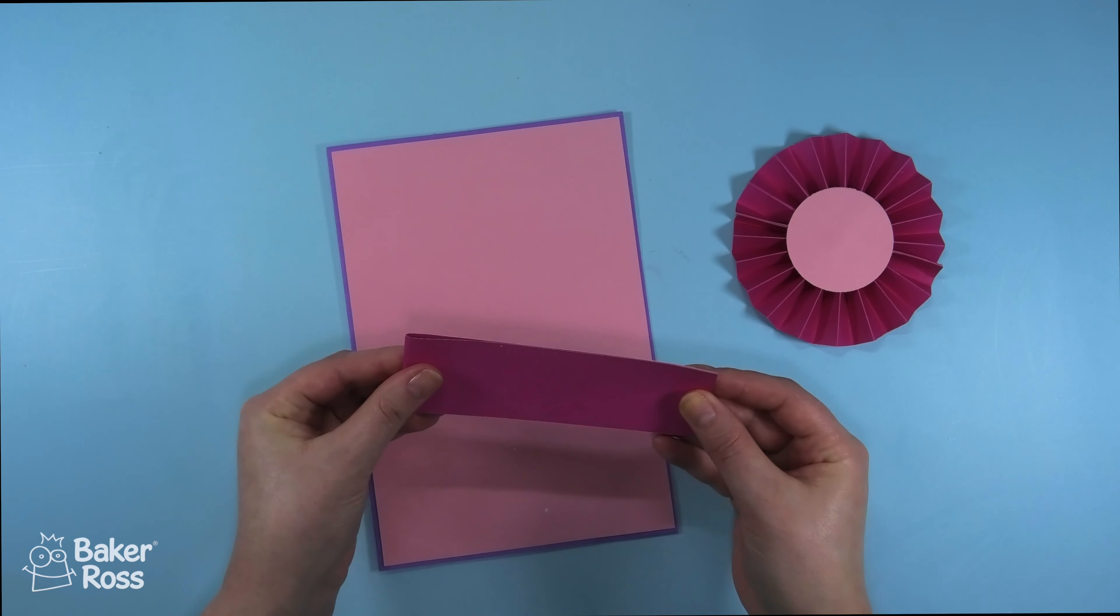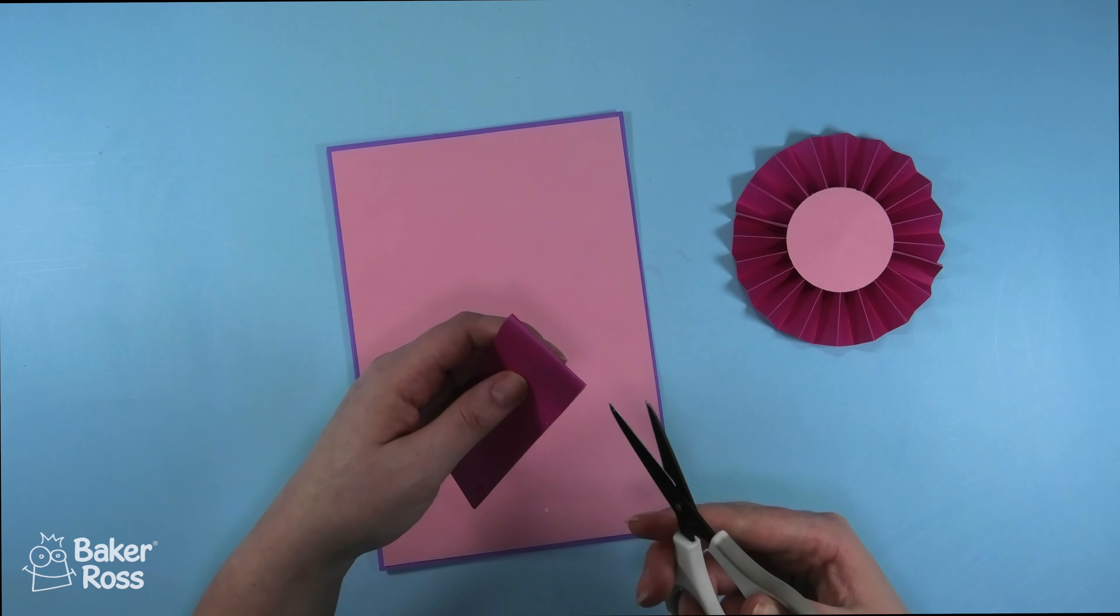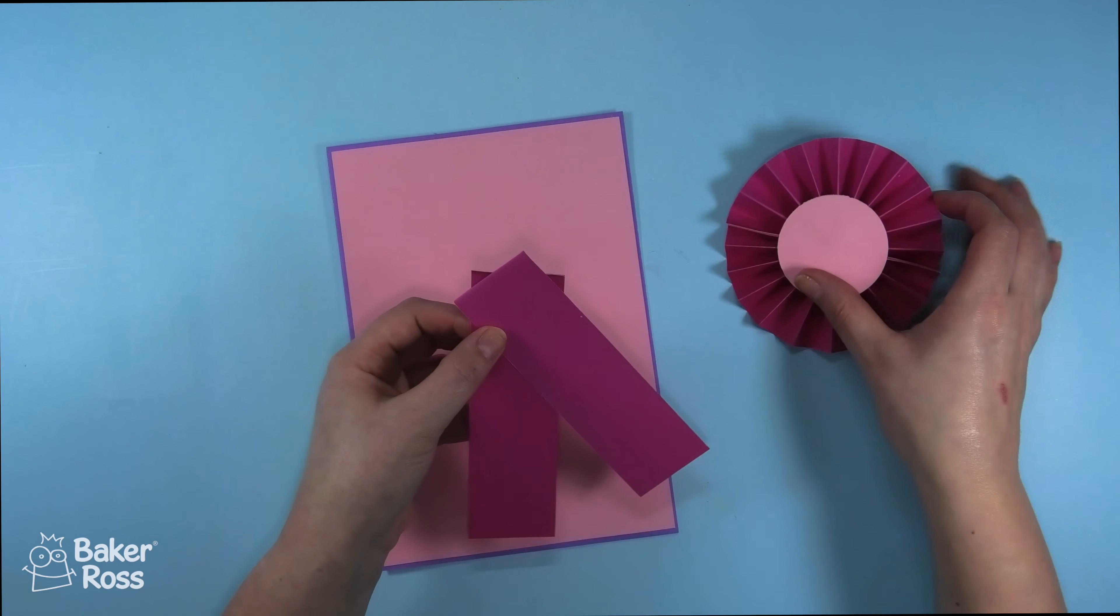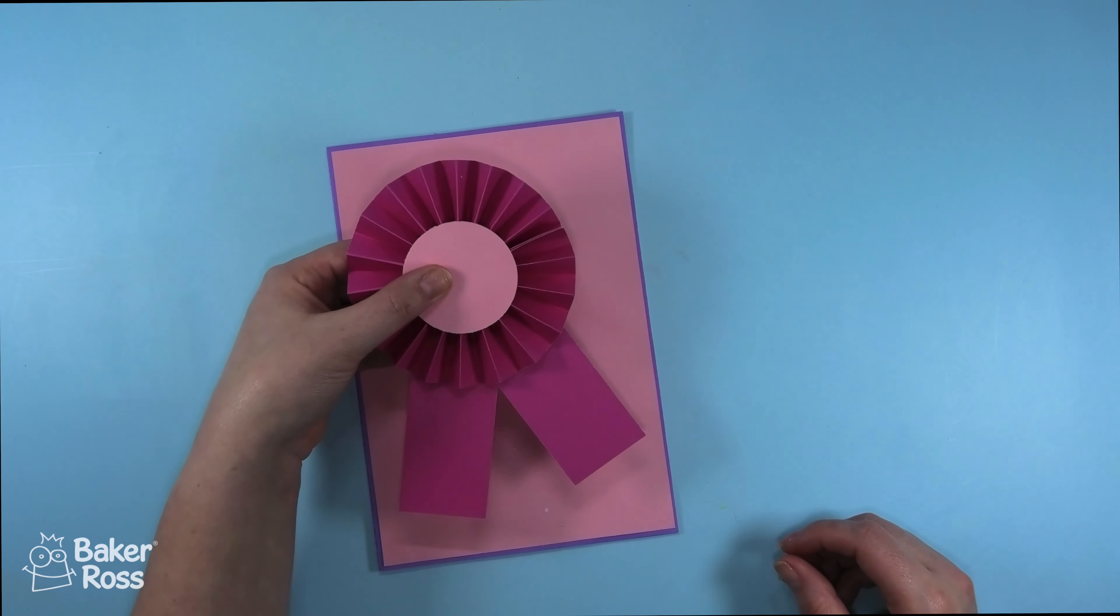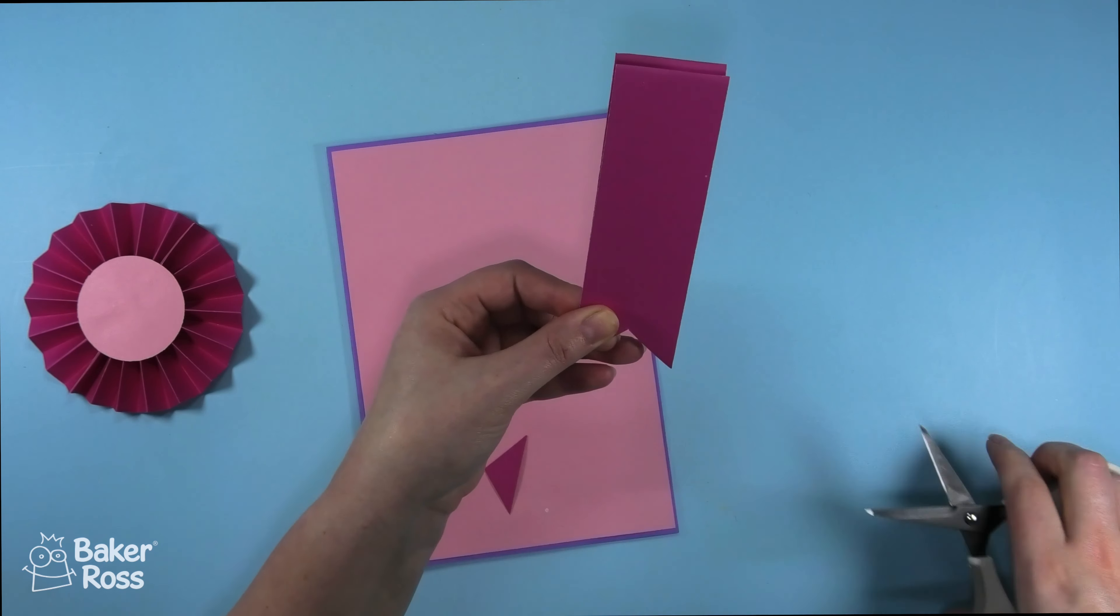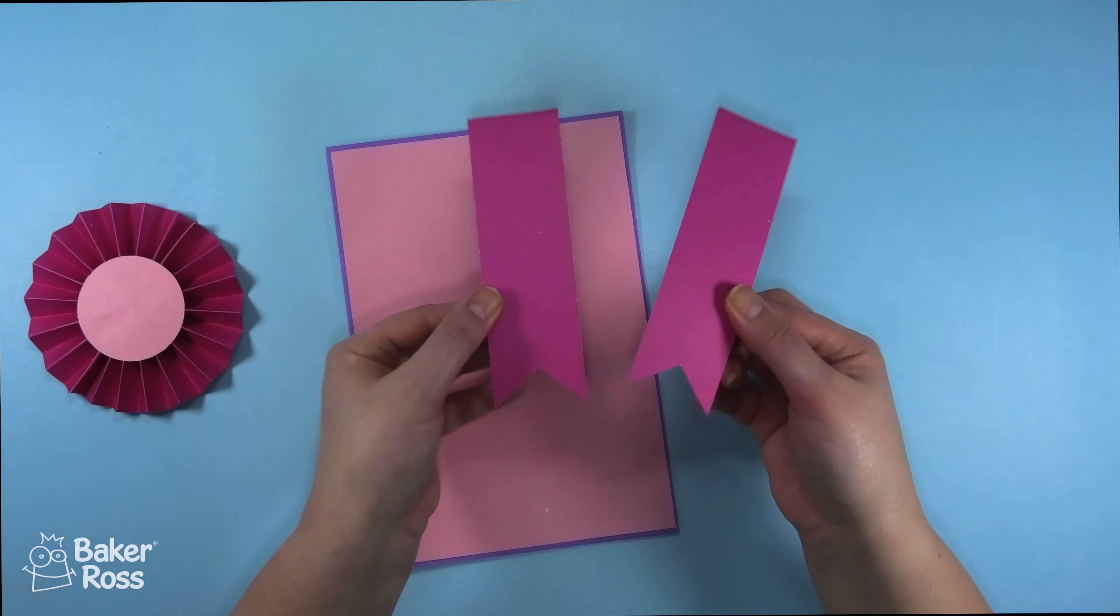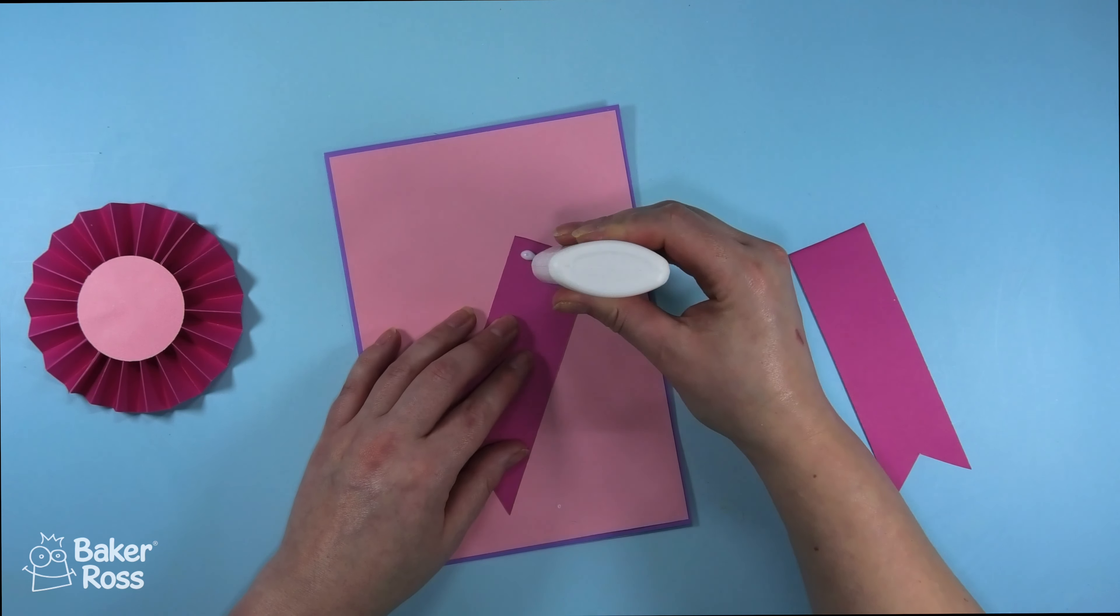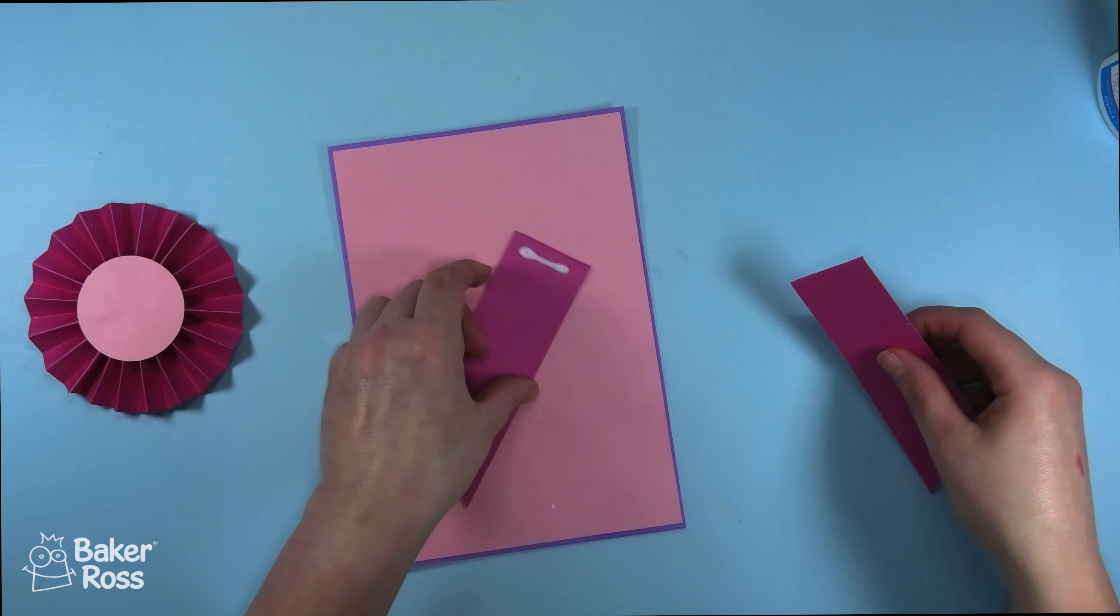Here I have another strip of paper that I'm going to use to make the tails of the rosette. I'm going to fold it in half and then I will stick that down to make the bottom of the rosette. I decided to add a fish tail to the bottom of these pieces. I think that just kind of makes it look a little more authentic as a rosette and then I'll use my PVA glue to stick everything together.